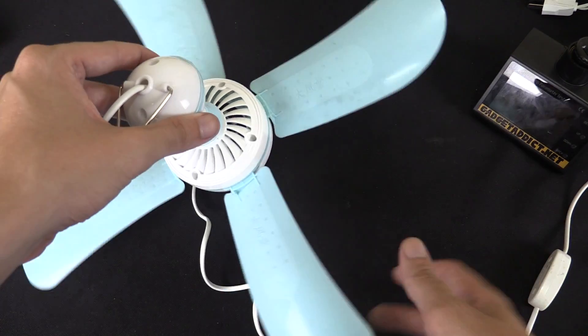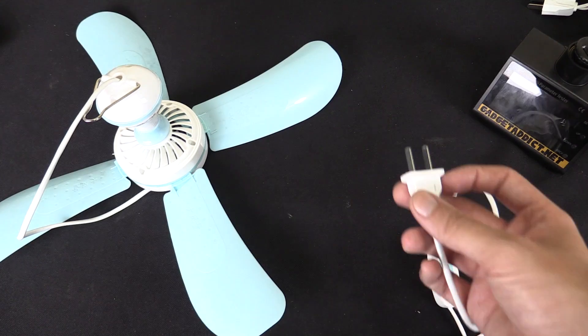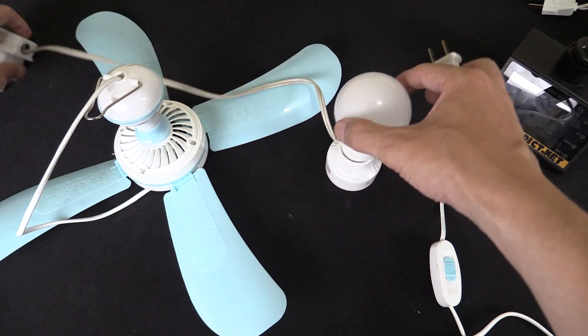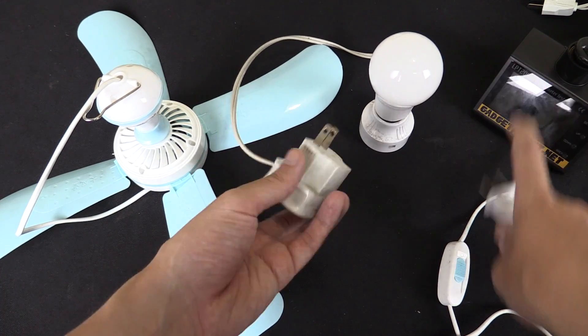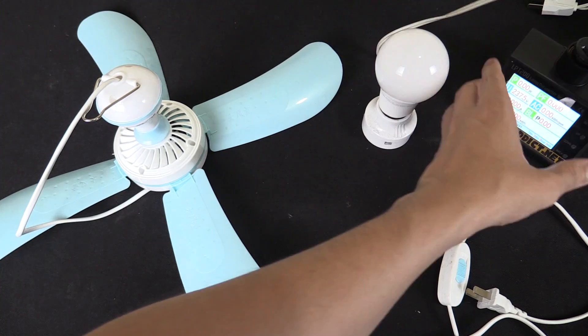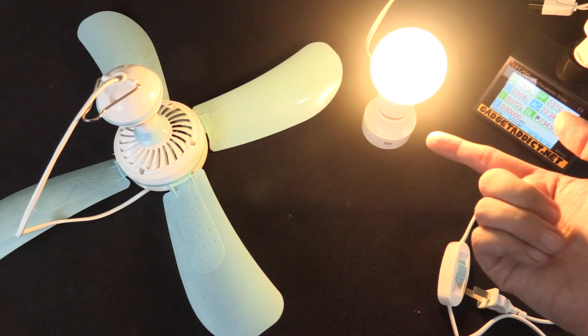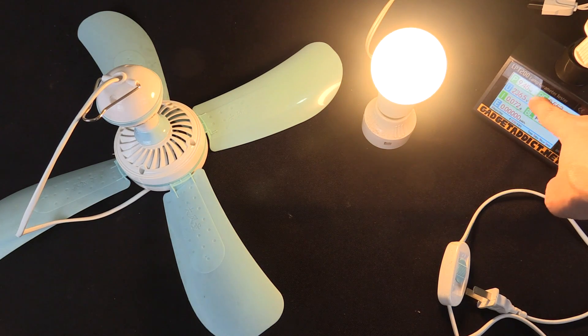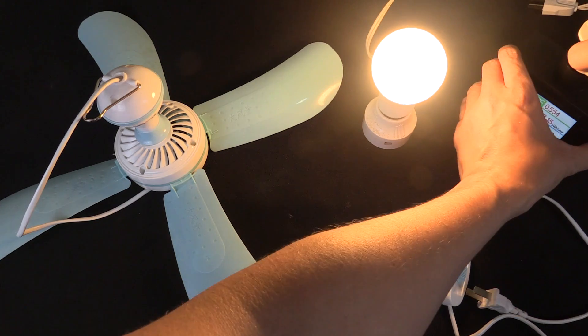Now, if it wasn't enough that this can be used as a ceiling fan, it can actually be used as a generator as well. So here I've got an LED light bulb. If I plug it into my power meter here, you can see it lights up and it's consuming around nine and a half watts.